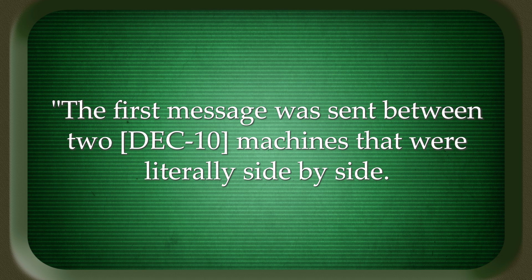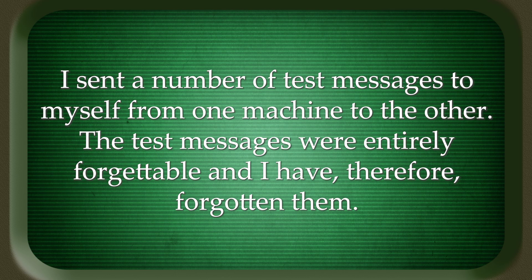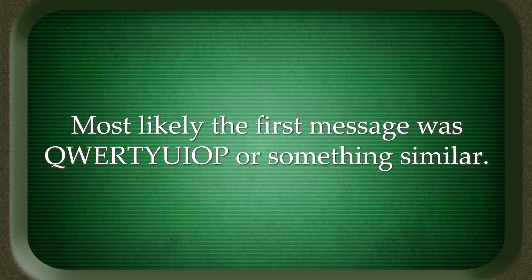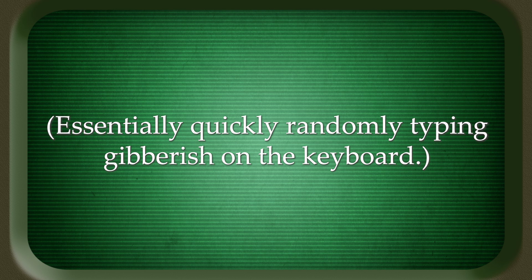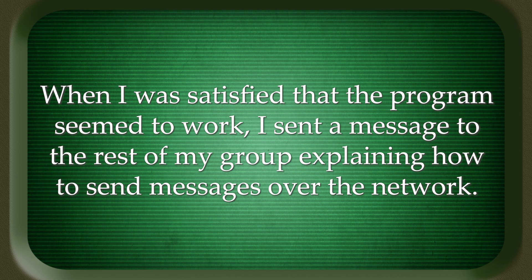Of this momentous occasion, Tomlinson said: "The first message was sent between two DECSYSTEM-10 machines that were literally side by side. The only physical connection they had, aside from the floor they sat on, was through the ARPANET. I sent a number of test messages to myself from one machine to the other. The test messages were entirely forgettable, and I have therefore forgotten them. Most likely the first message was QWERTYUIOP, or something similar — essentially quickly randomly typing gibberish on the keyboard. When I was satisfied that the program seemed to work, I sent a message to the rest of my group explaining how to send messages over the network. The first use of network email announced its own existence."